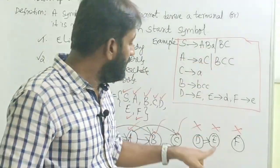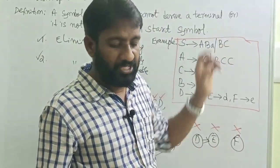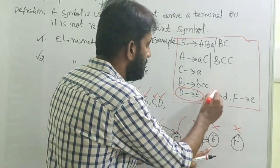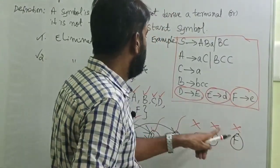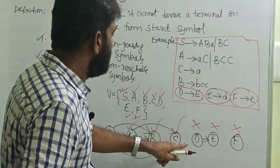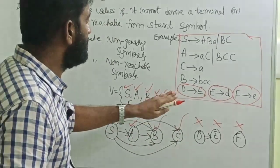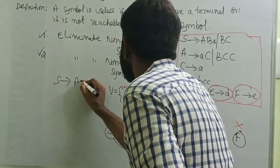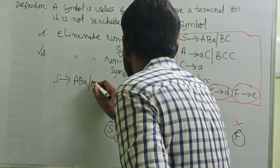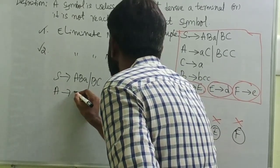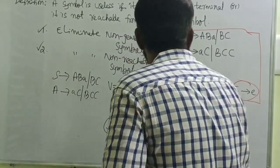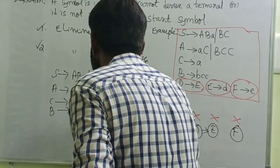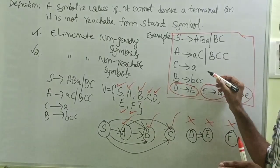Now we can eliminate D, E, and F — these are all the useless symbols. Eliminate D and its production D → E, eliminate E and its production E → D, eliminate F and its production F → E. The grammar after simplification is: S → ABa | BC, A → aC | BCC, C → a, B → bCC.